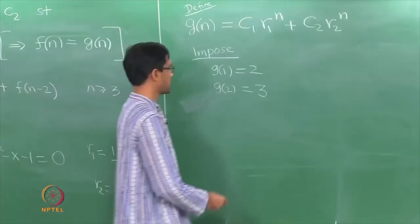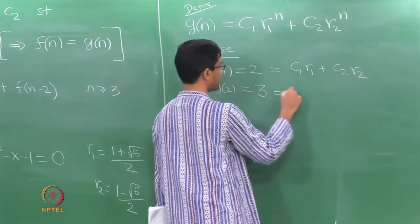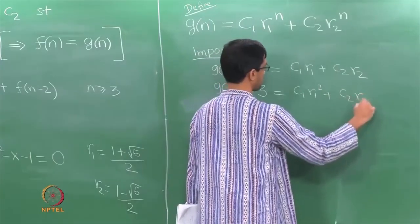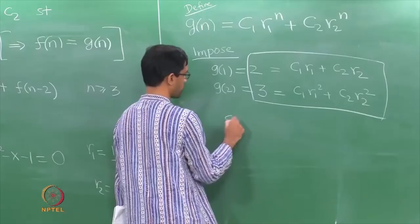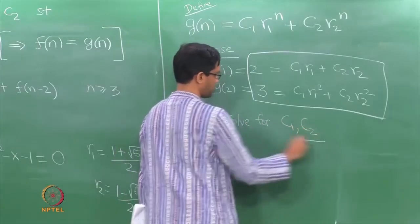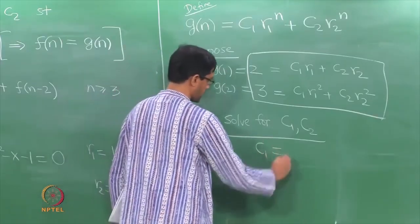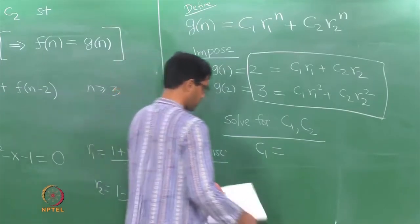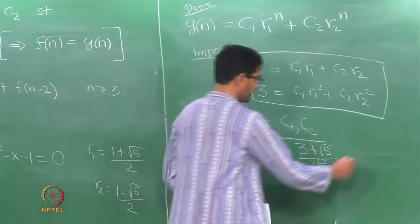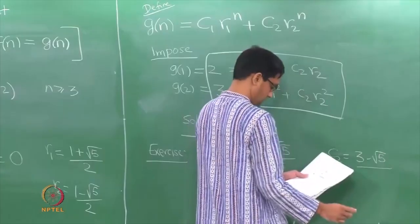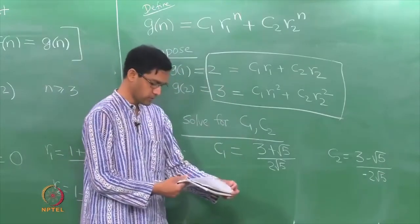We impose the conditions G of 1 equals 2 and G of 2 equals 3, giving 2 equations for the 2 unknowns C1 and C2: C1 r1 plus C2 r2 equals 2, and C1 r1 squared plus C2 r2 squared equals 3. Solving these gives C1 equals 3 plus root 5 over 2 times square root of 5, and C2 equals 3 minus square root of 5 over negative 2 times square root of 5.